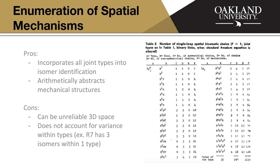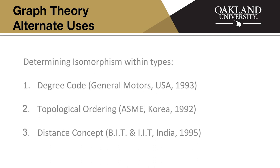But we'll leave that there because there's a couple other ways to identify other types of mechanisms. And the other papers I looked at, they were a little more limited. They weren't trying to identify mechanisms with a variety of joints. They weren't looking at screws or ball joints. They were more concerned with how do we just identify binary linkages with revolute joints. And there's a few different sources. I picked up the degree code produced by General Motors, topological ordering. I don't know why it's ASME Korea, but I guess they had a university professor work on some stuff out there.